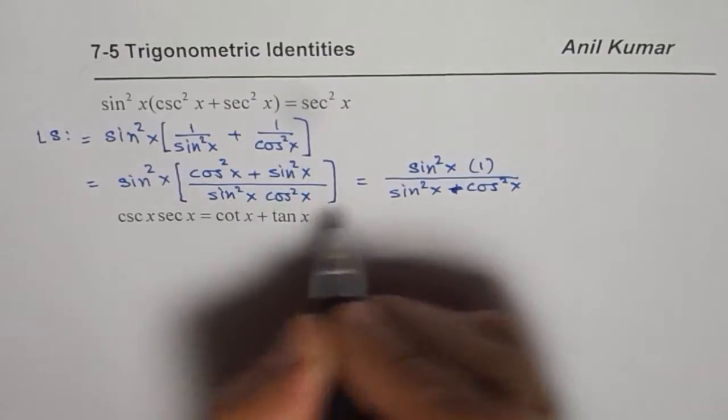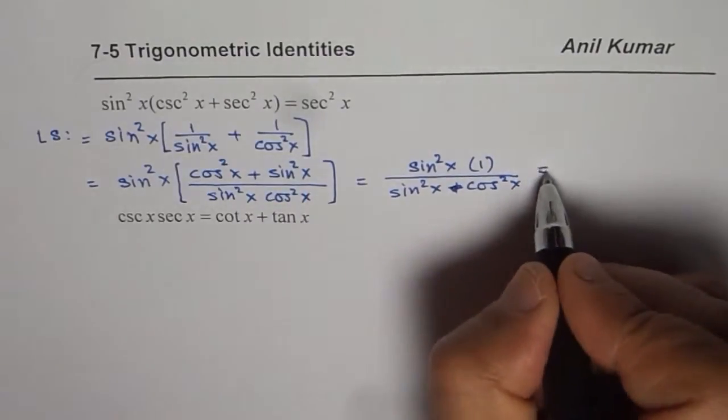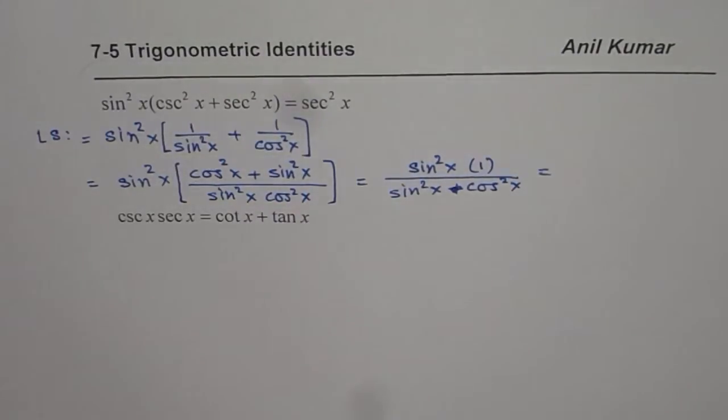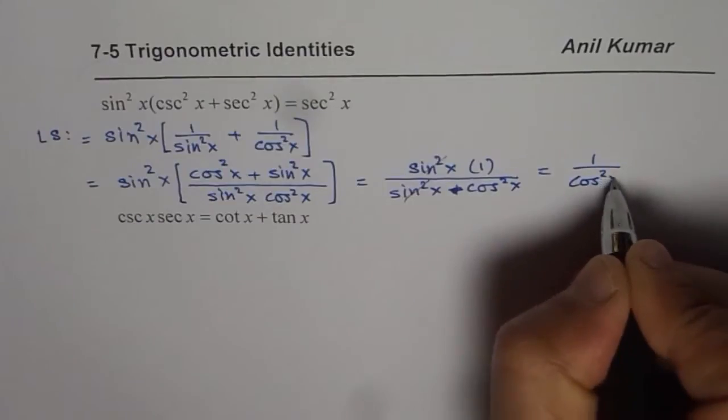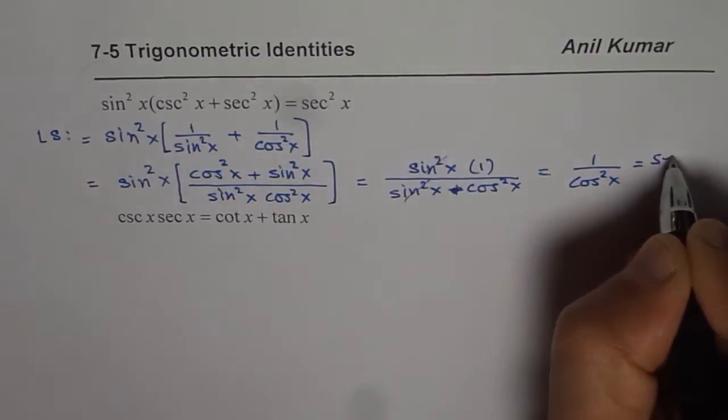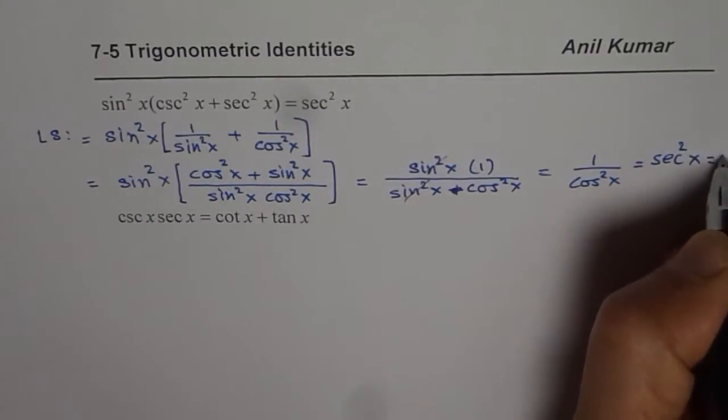This is product in the denominator. Now you can cancel the sin²x. You get 1 over cos²x which is indeed sec²x or the right side.